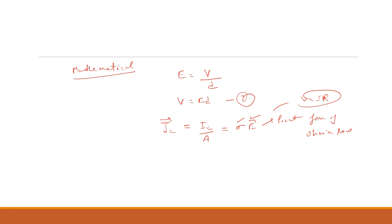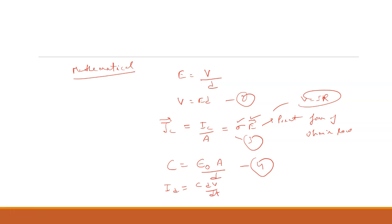The capacitance of a parallel plate capacitor is given by C equals epsilon-naught times A by D — equation number four. Now, rewriting equation number one: ID equals C times dV by dT.